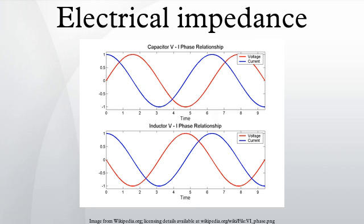Inductive reactance: inductive reactance is proportional to the signal frequency and the inductance. An inductor consists of a coiled conductor. Faraday's law of electromagnetic induction gives the back-EMF due to a rate of change of magnetic flux density through a current loop. The back-EMF is the source of the opposition to current flow. A constant direct current has a zero rate of change and sees an inductor as a short circuit. An alternating current has a time-averaged rate of change that is proportional to frequency, which causes the increase in inductive reactance with frequency.